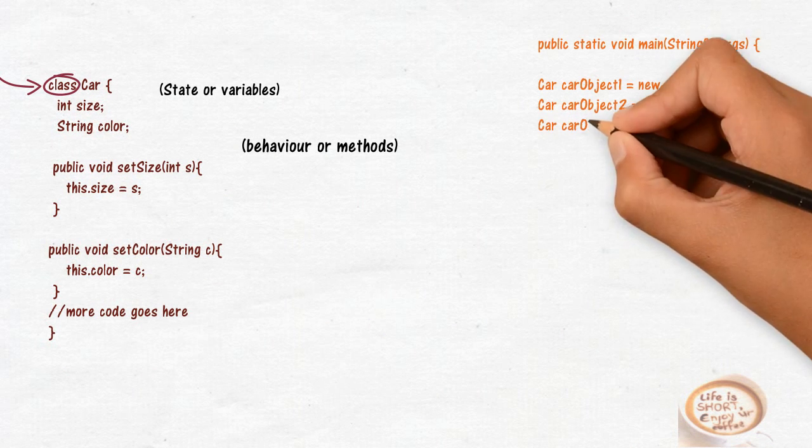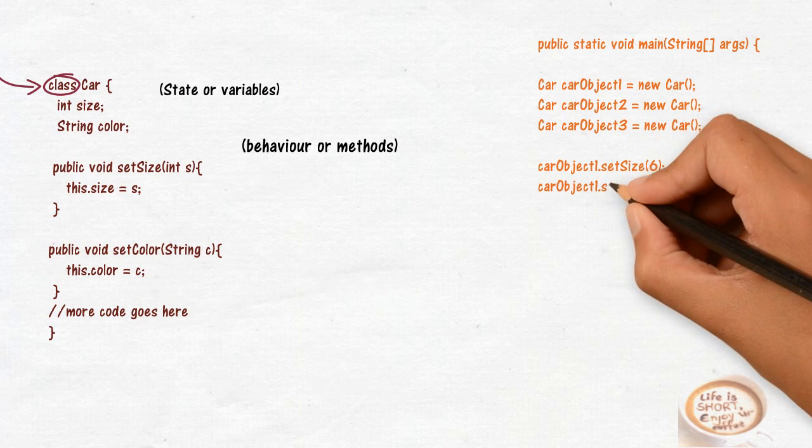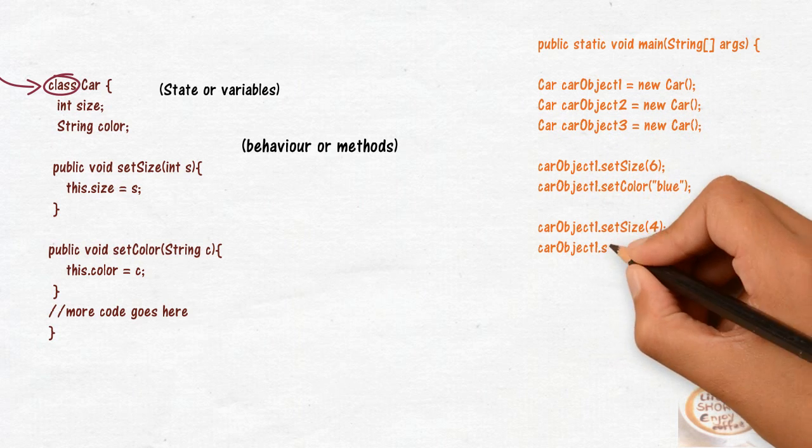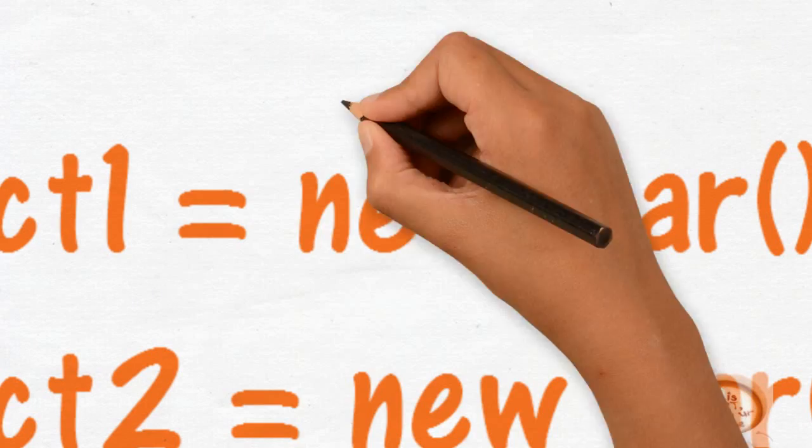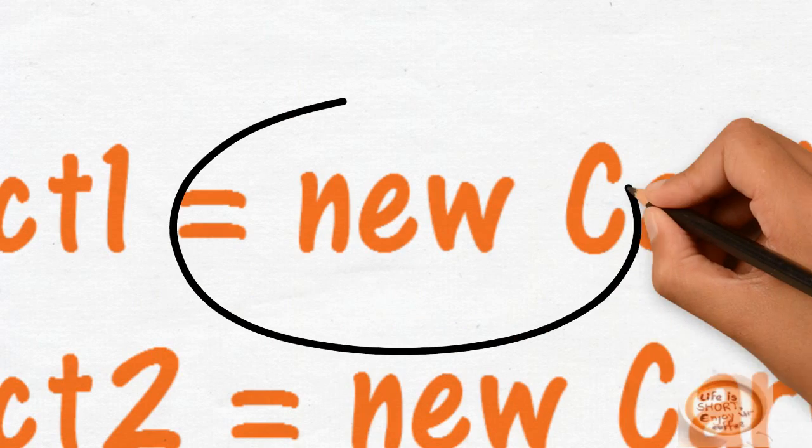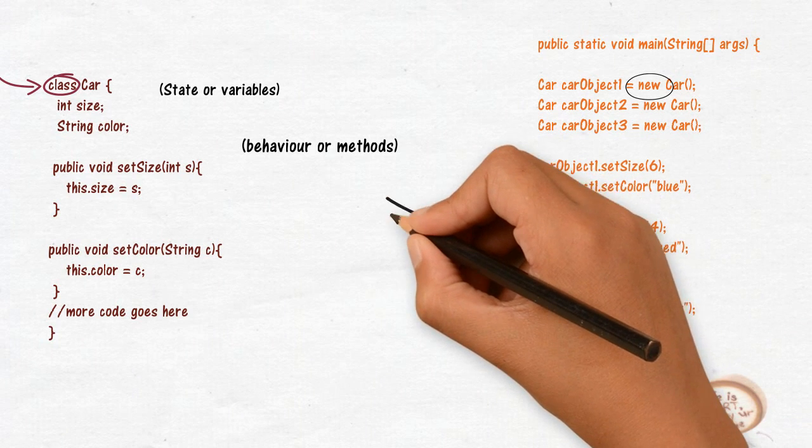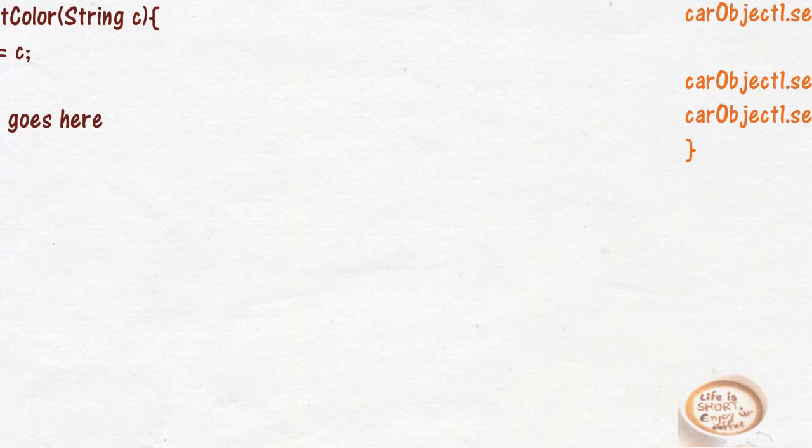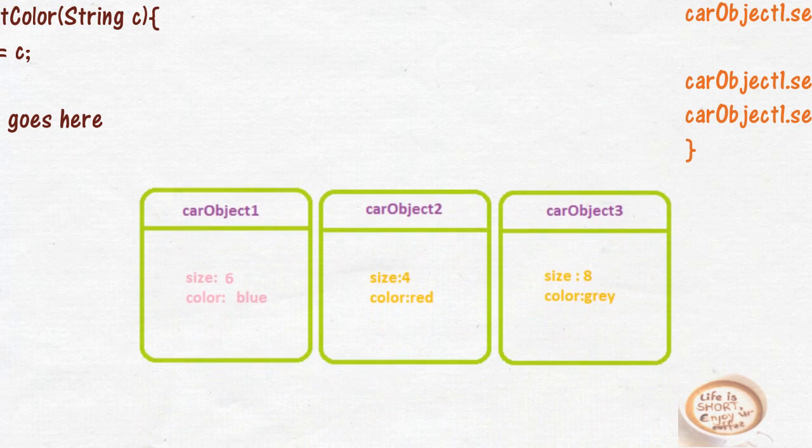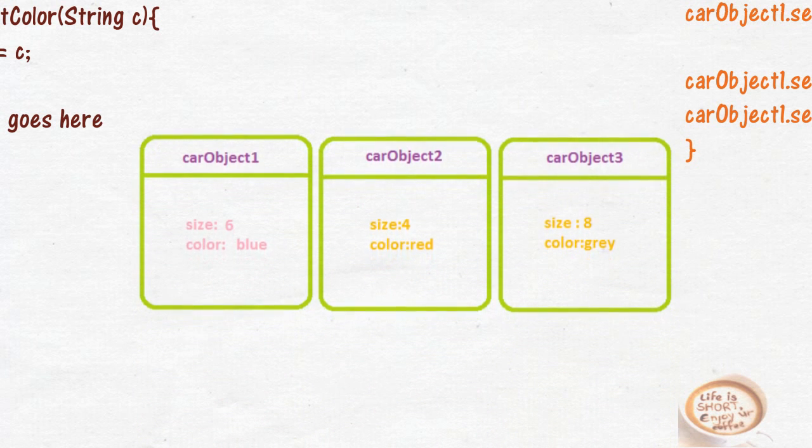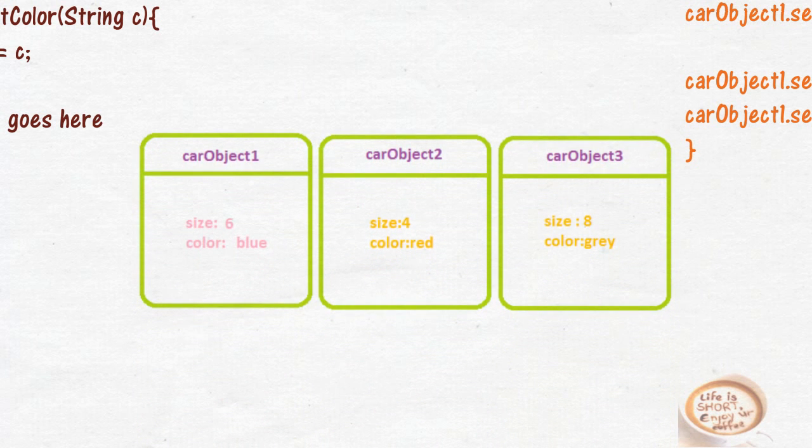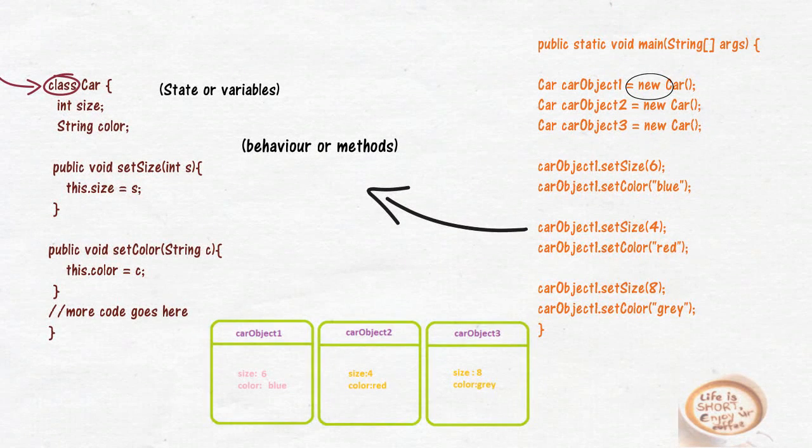is used to create so many objects using new keyword: object one, two, and three. And I am going to use the behavior and methods to set all these three objects, and I will set the size and color to different values to different objects. So remember, we can create as many objects as we want using the template or blueprint.